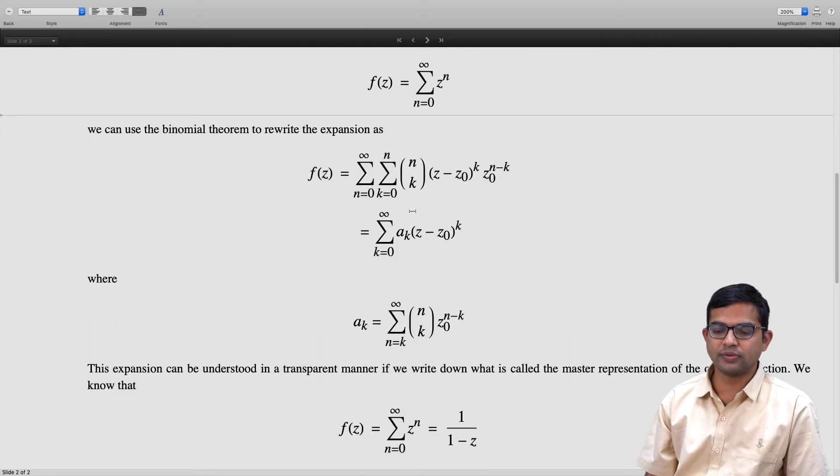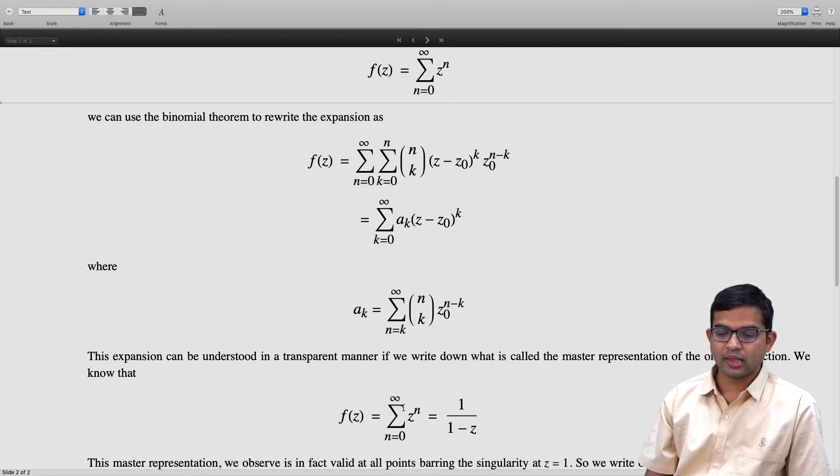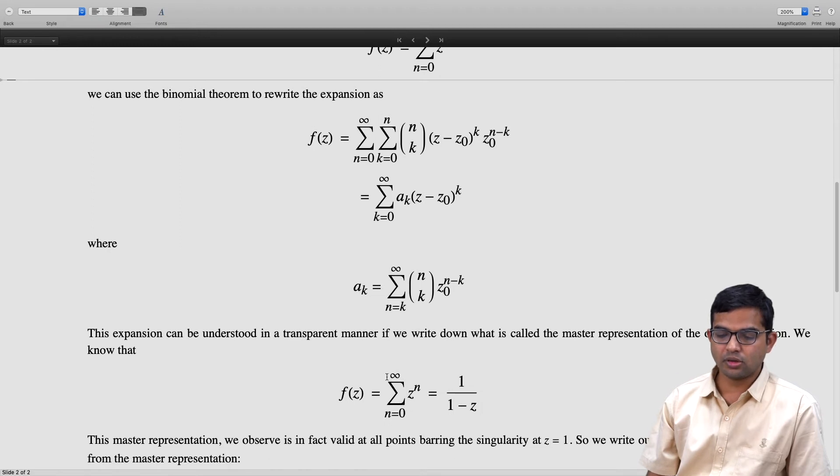If you look at this, although the left-hand side, this Taylor series, is convergent only when mod z is less than one, on the other hand the right-hand side is actually a meaningful function. It is an analytic function at all points z except z equal to one.